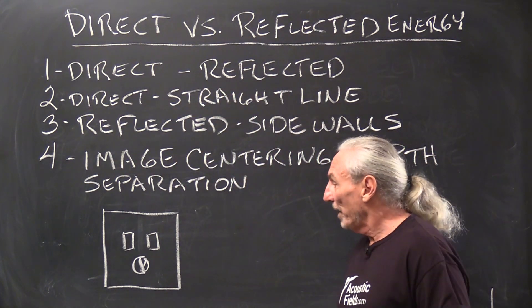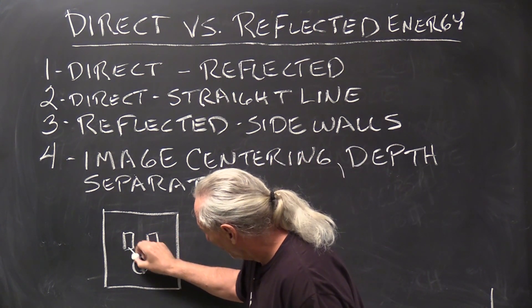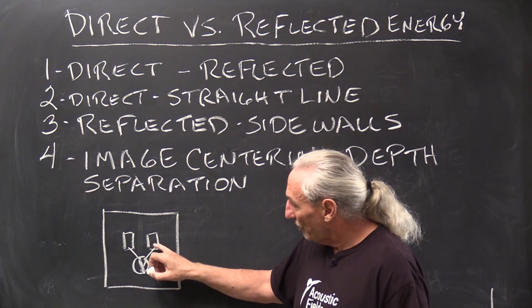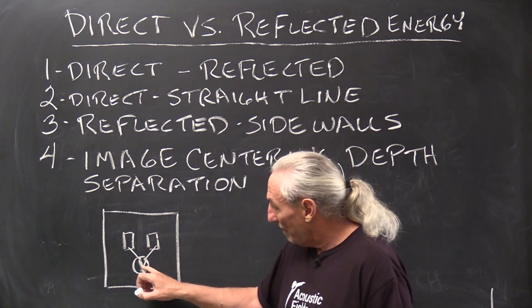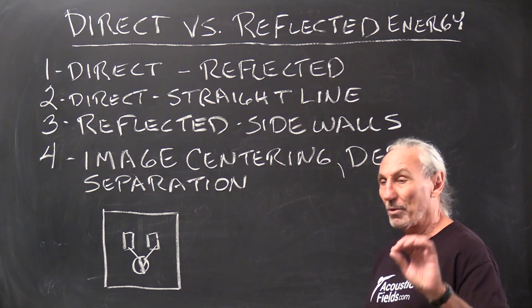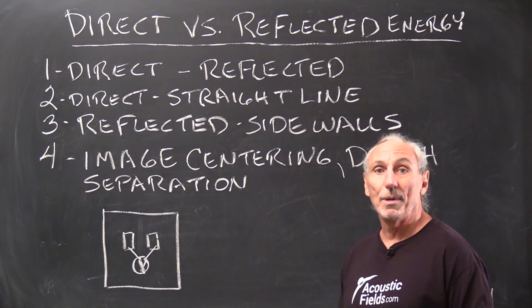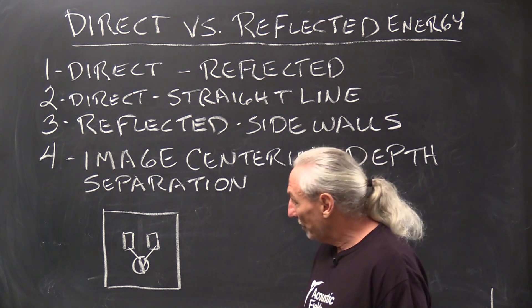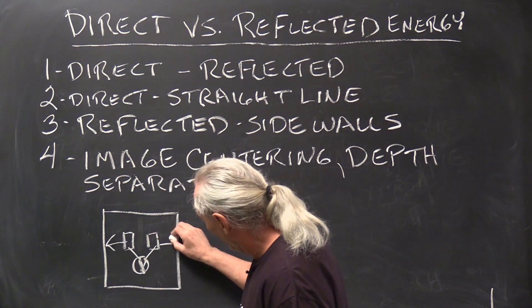Direct energy versus reflected. The direct energy from our speakers is that straight line energy to our ears. We know the shortest distance between two points is a straight line, so point A, point B our ears, point A the speakers, that shortest distance is that straight line energy from our speakers. Well, that's not the only energy we get in a room, right?